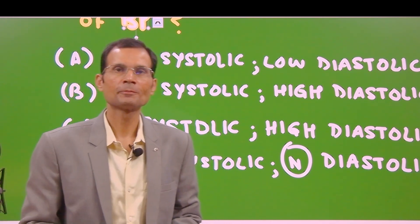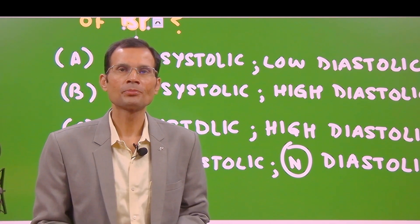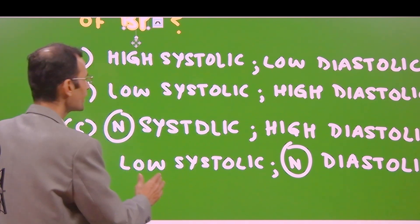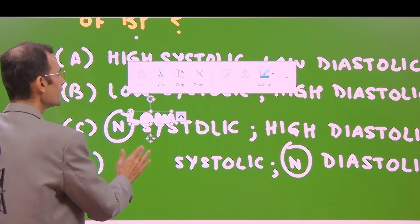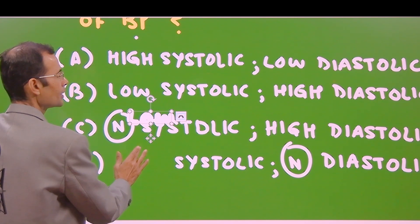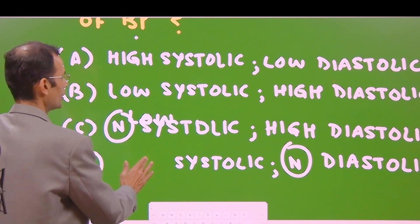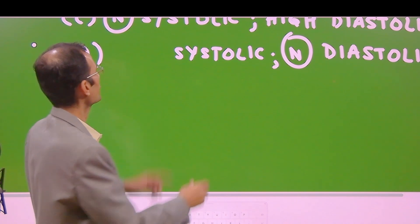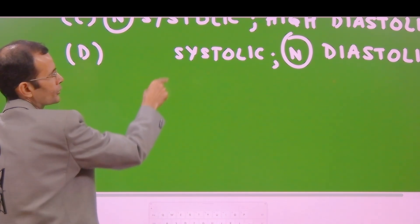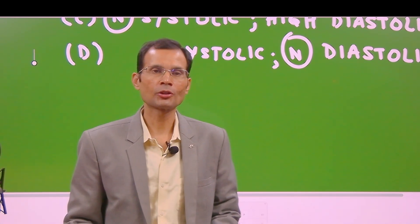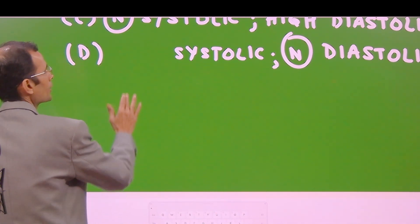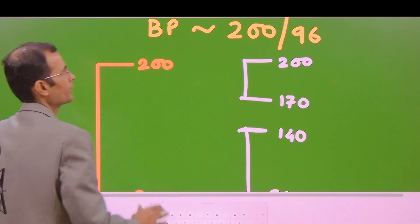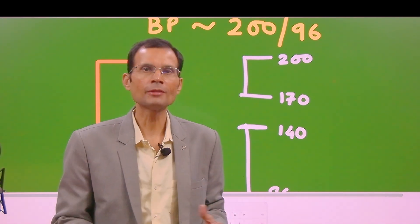Think about it. The answer is that the most likely error is going to be low systolic but normal diastolic blood pressure. Low systolic but normal diastolic is the most likely error that is going to happen. Let's understand why this is the most likely error.